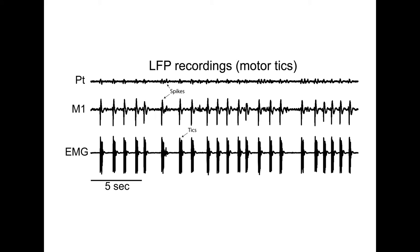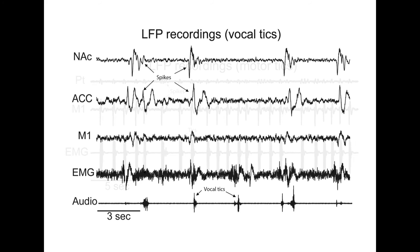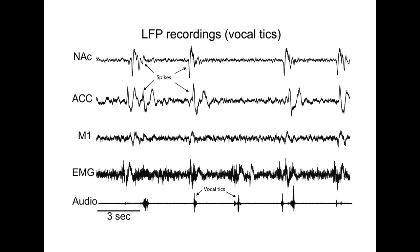However, neuronal recordings in the vocal tics model have provided a different picture. In the case of vocalization, LFP spikes were observed in the ACC and the nucleus accumbens, which were often associated with the emergence of vocal tics.